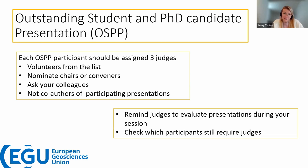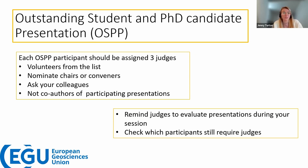The Outstanding Student and PhD Candidate Presentations — OSPP — are still occurring this year, with three judges assigned to each participant. These judges can come from volunteers, nominated chairs or conveners, or colleagues, as long as they are not co-authors of the participating presentations and have had their PhD or are an expert in their field. Please remind judges to evaluate presentations throughout the General Assembly. Each division has an OSPP judge coordinator, so reach out to them if you're having difficulties finding judges.